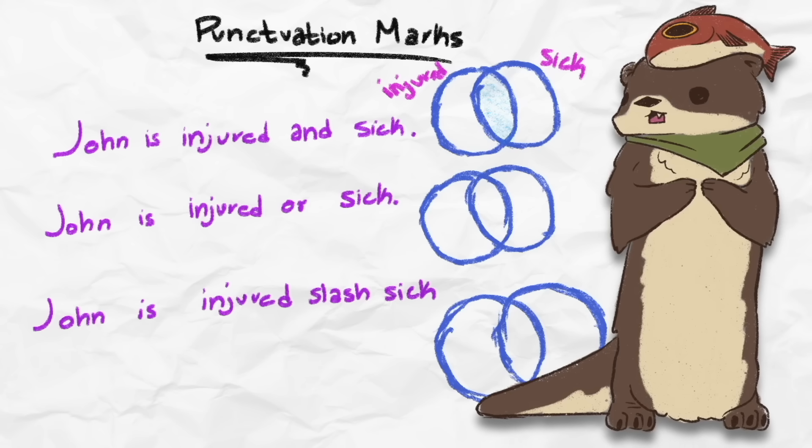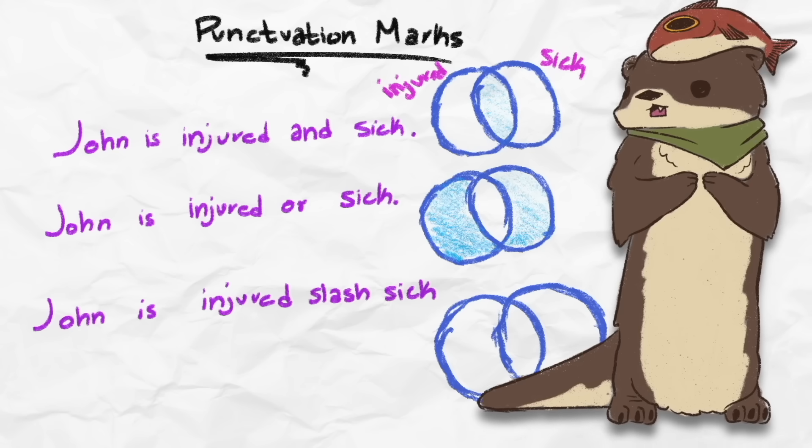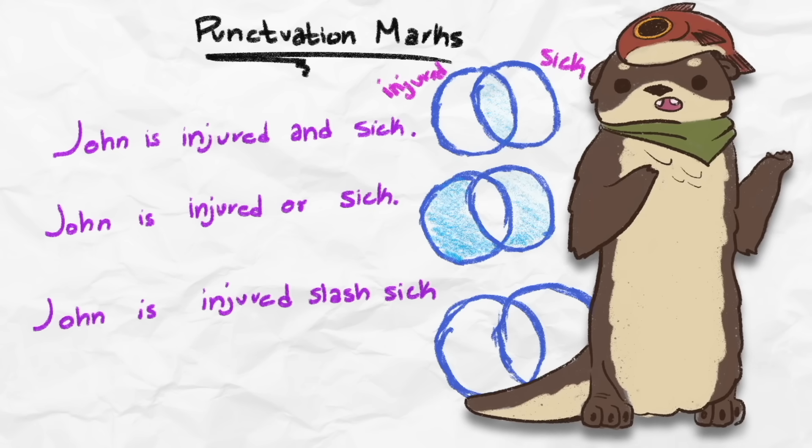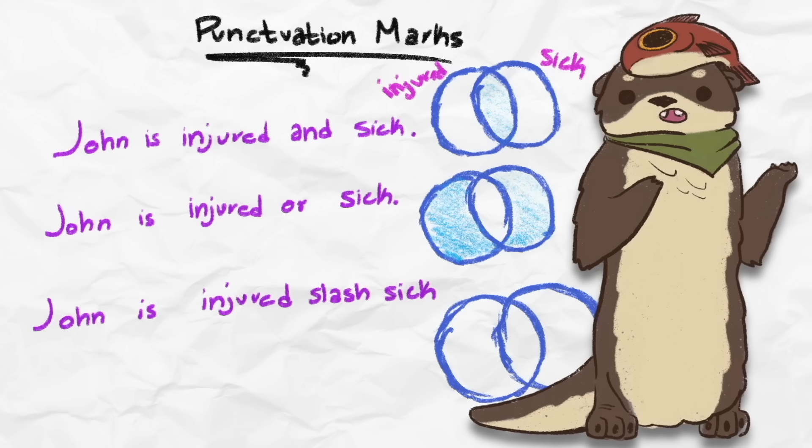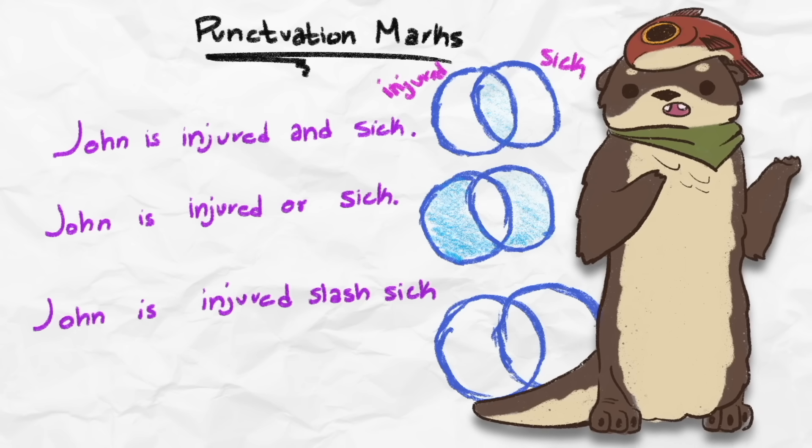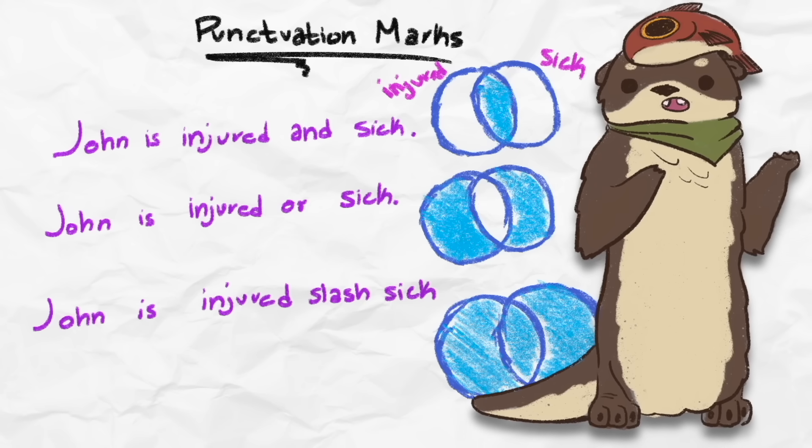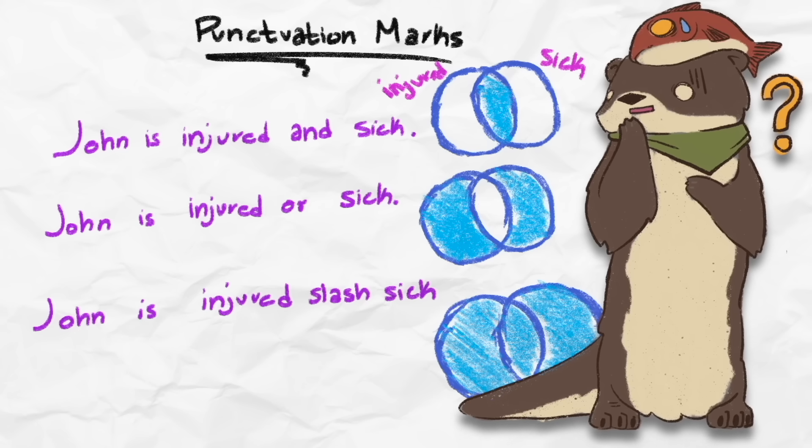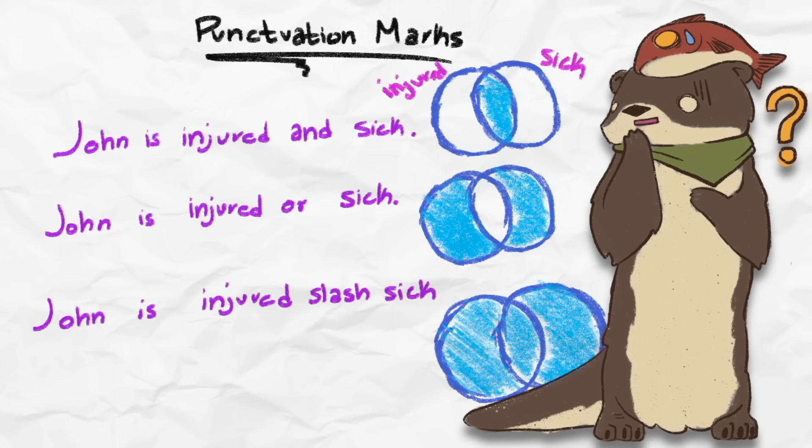However, in the third sentence, it uses the word slash, and that gives another unique meaning. In this sentence, we are suggesting that John is either injured or sick, but he can also be both. We don't really know. Unlike the words and or or, the conjunction slash allows for more combinations of injured and sick.